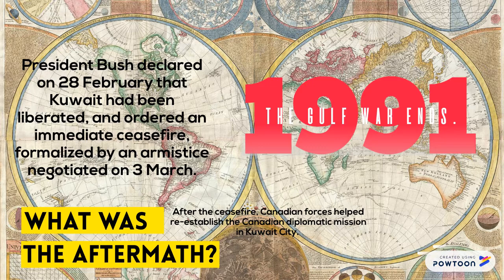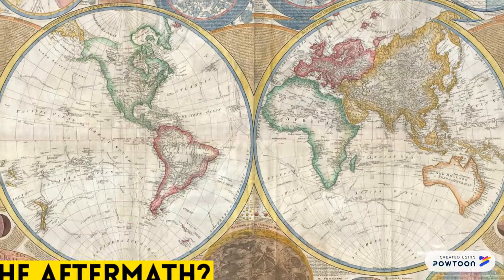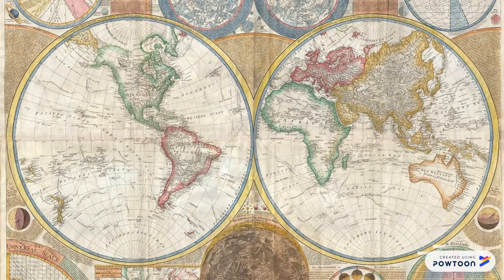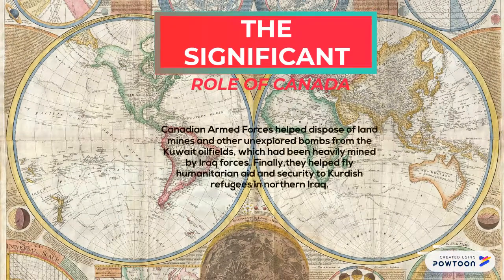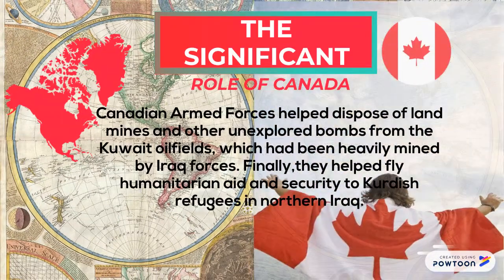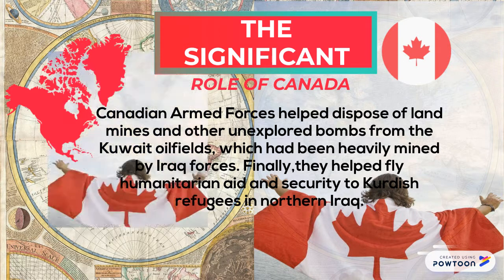After the ceasefire, Canadian forces helped re-establish the Canadian diplomatic mission in Kuwait City. They helped dispose of landmines and other unexploded bombs from the Kuwaiti oil fields, and helped fly humanitarian aid and security to Kurdish refugees in Northern Iraq.